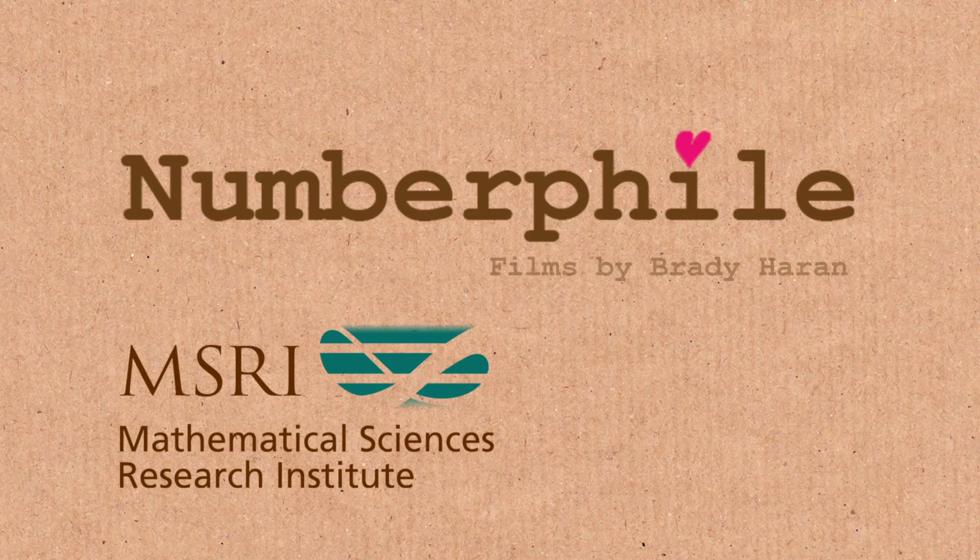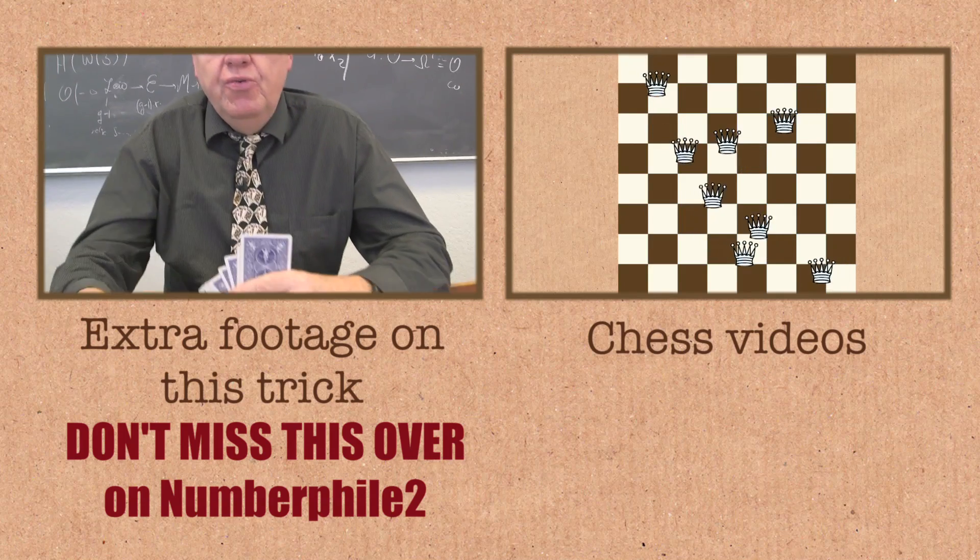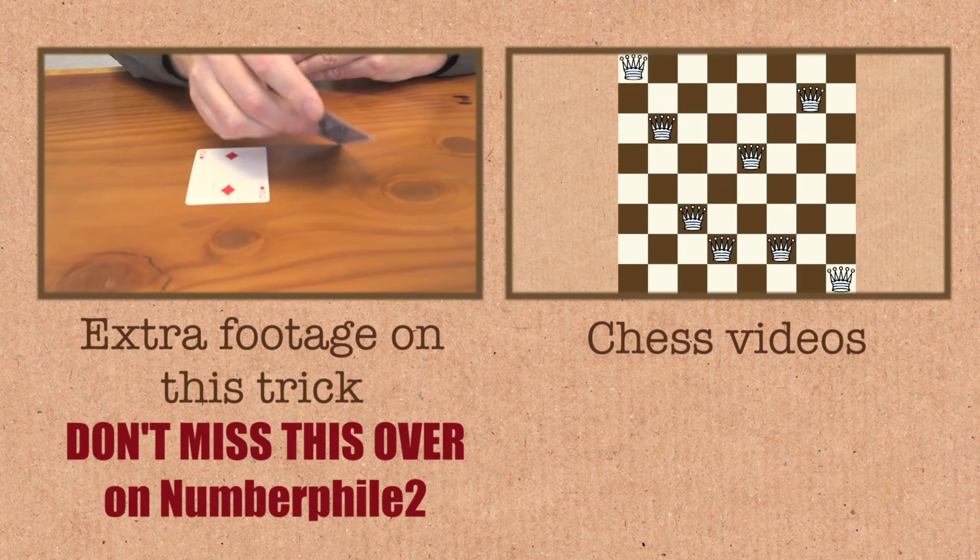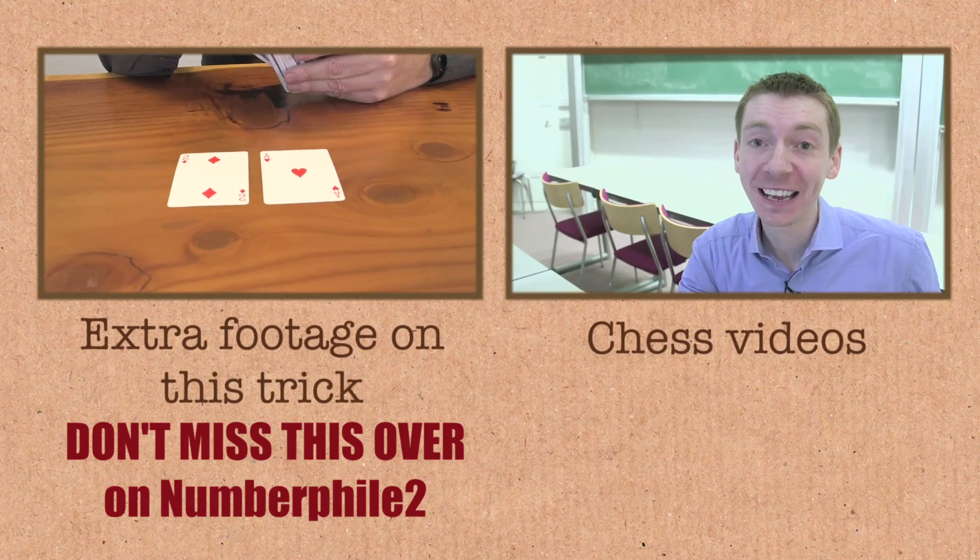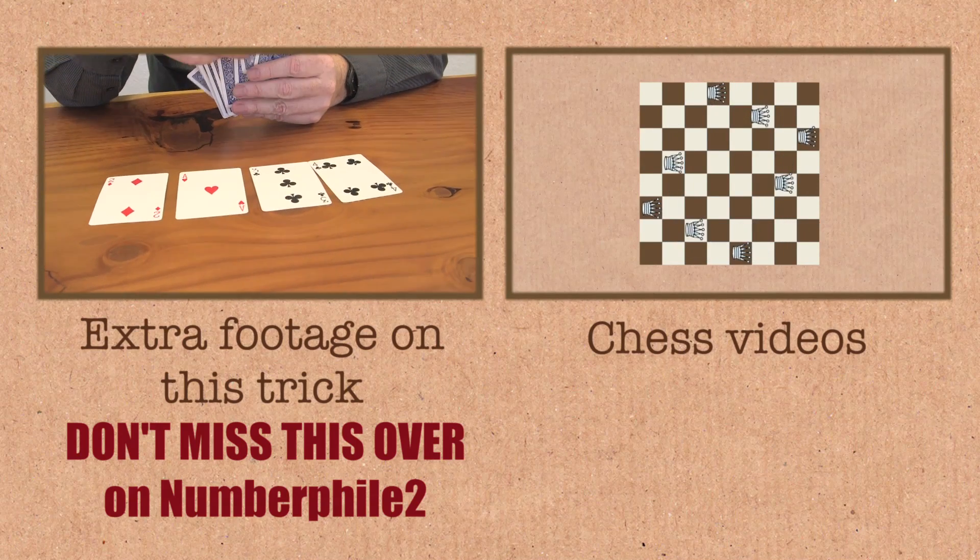Well, interestingly, you can do other numbers. For instance, you can start with a two first, and then a one, and then add those to get three, and add one and three to get four, and add three and four to get seven.